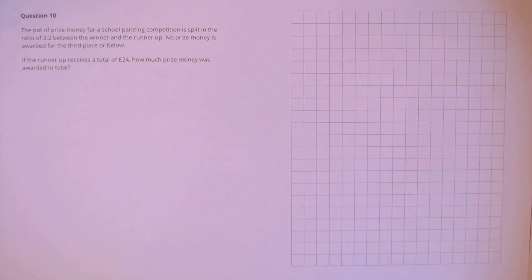Question 10: The pot of prize money for a school painting competition is split in the ratio of 3 to 2 between the winner and the runner-up. No prize money is awarded for the third place or below. If the runner-up receives a total of £24, how much prize money was awarded in total?